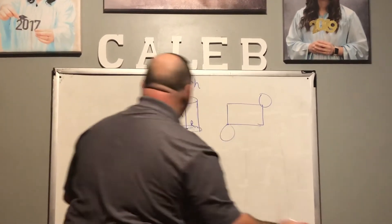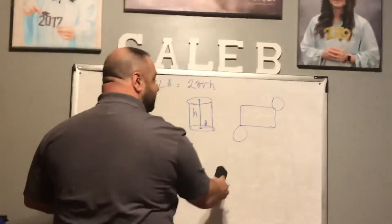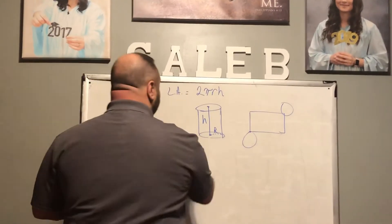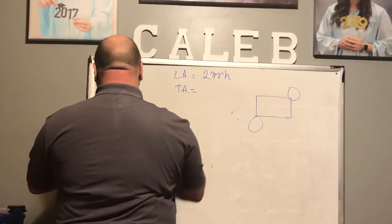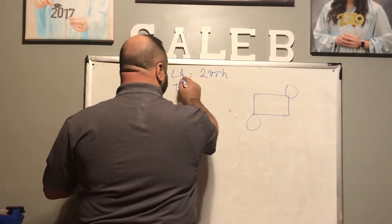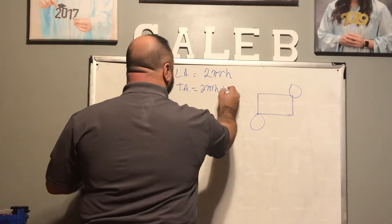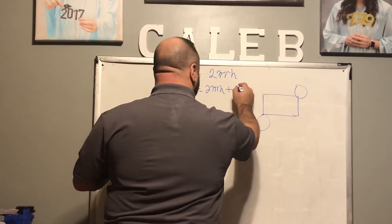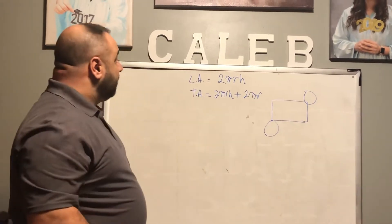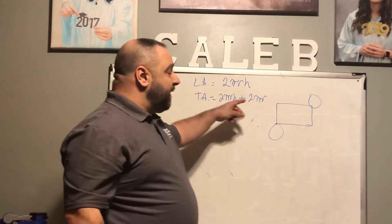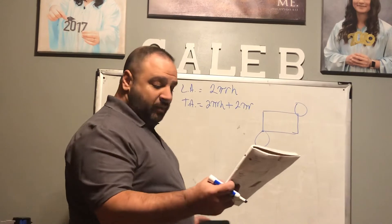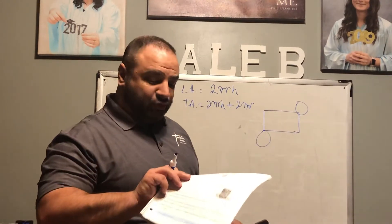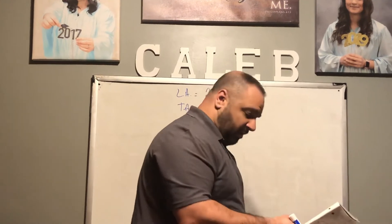Now, to find the total area, we're going to take the area of our bases and the area of the rectangle and add them together. The total area is the lateral area 2πRH plus 2πR². That gives us the area of a right circular cylinder. So let's look at the bottom of page 29 and do number 2 and number 4 together.